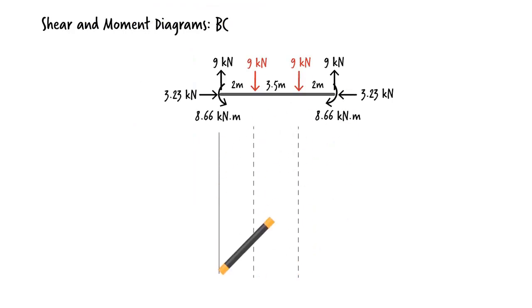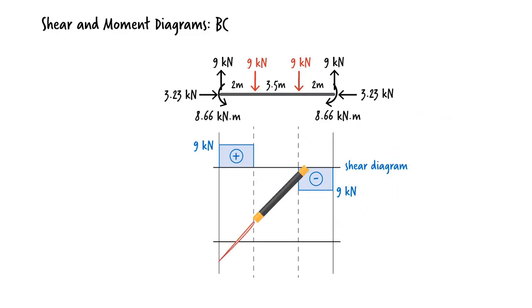For BC, due to the presence of the applied loads, shear behaves like a step function, dropping in value at the points of application of the loads. Bending moment attains its maximum positive value in the middle segment of the beam, and it reaches its maximum negative value at the ends of member.